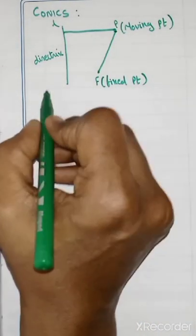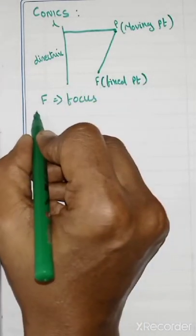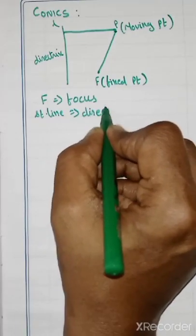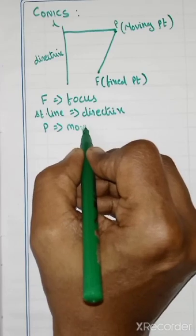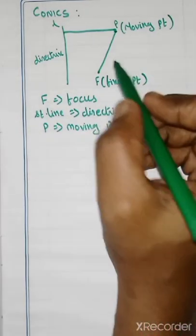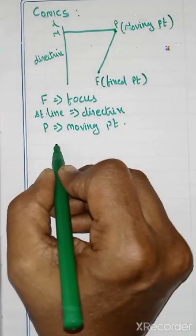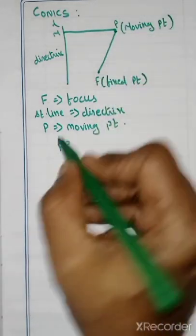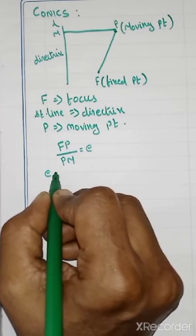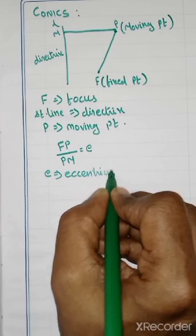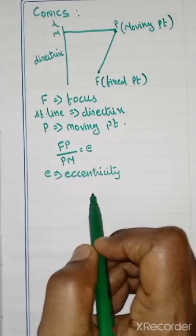The fixed point F is called the focus. The fixed straight line is called the directrix. P is the moving point. The conic definition states that FP divided by PM equals E, where E is called the eccentricity.